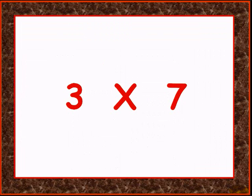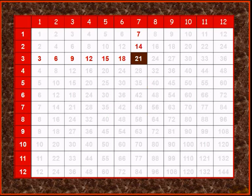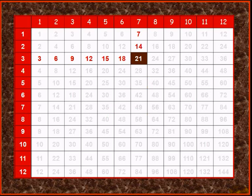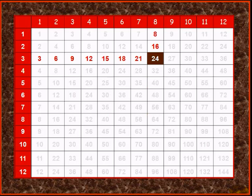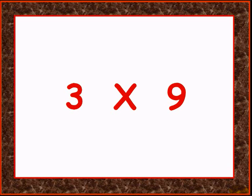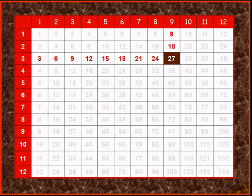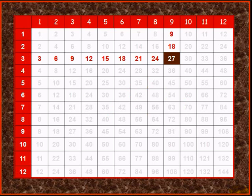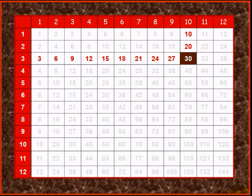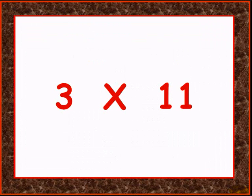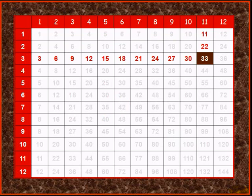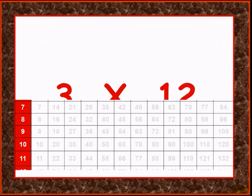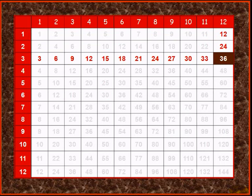Adding three times seven gives twenty-one. Adding three times eight gives twenty-four. Adding three times nine gives twenty-seven. Adding three times ten gives thirty. Adding three times eleven gives thirty-three. Adding three times twelve gives thirty-six.